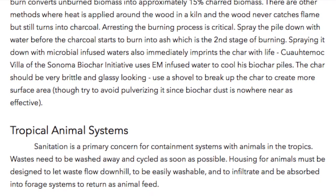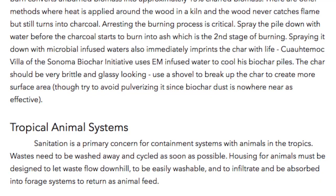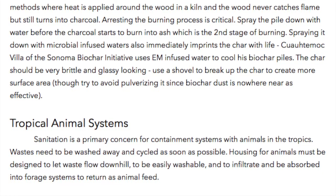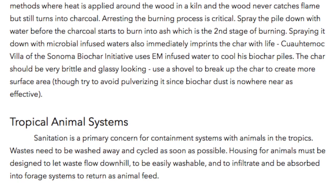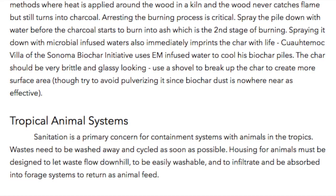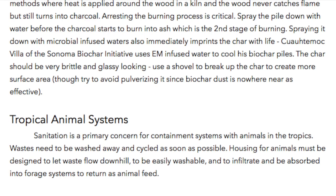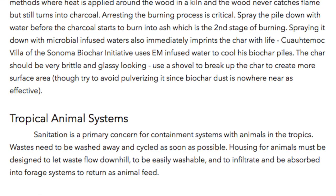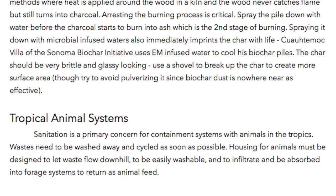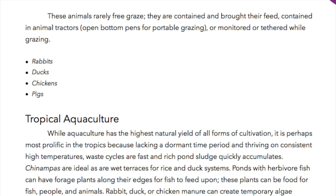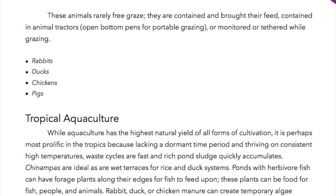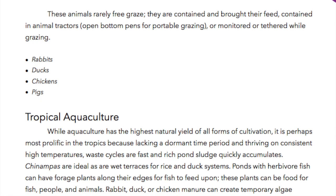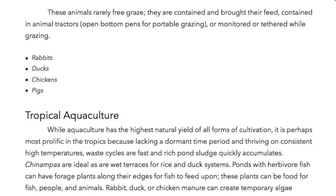Tropical Animal Systems. Sanitation is a primary concern for containment systems with animals in the tropics. Wastes need to be washed away and cycled as soon as possible. Housing for animals must be designed to let waste flow downhill, to be easily washable, and to infiltrate and be absorbed into forage systems to return as animal feed. These animals rarely free graze — they are contained and brought their feed, kept in animal tractors, open-bottom pens for portable grazing, or monitored or tethered while grazing.